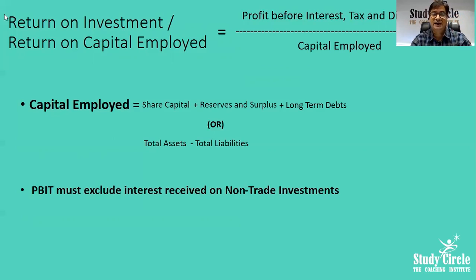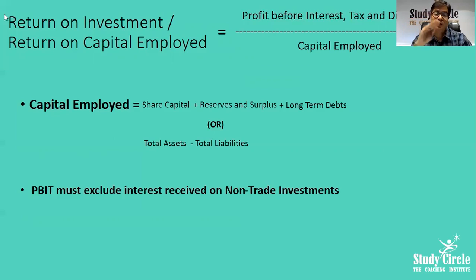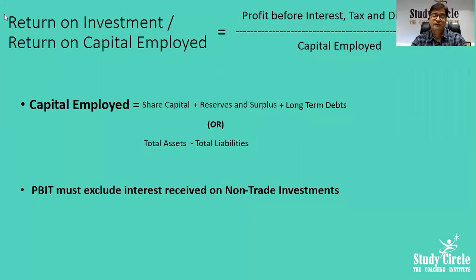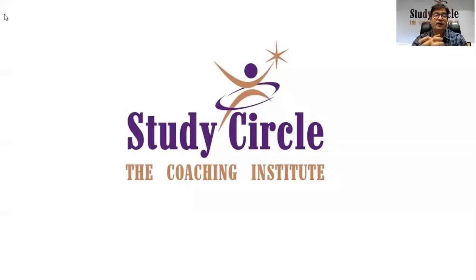Profit before interest and tax must exclude interest received on non-trade investments; that is a non-operating income and goes to the minus side. Trade investment interest should be included. That brings us to the end of the video — we covered all the profitability ratios.